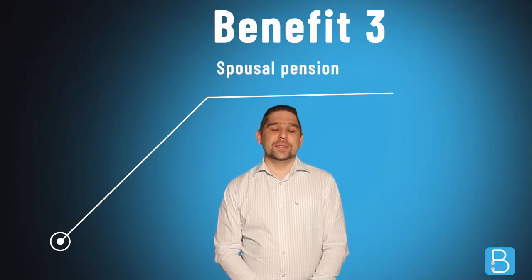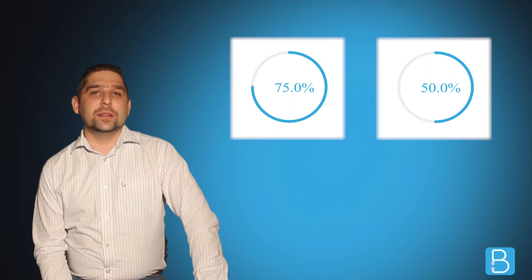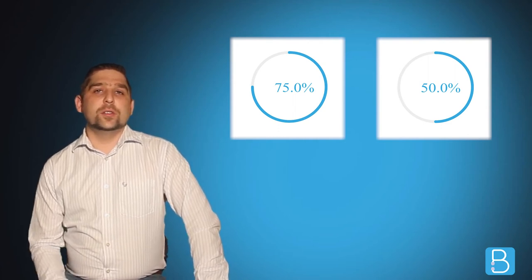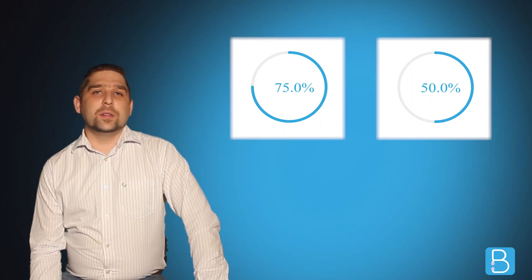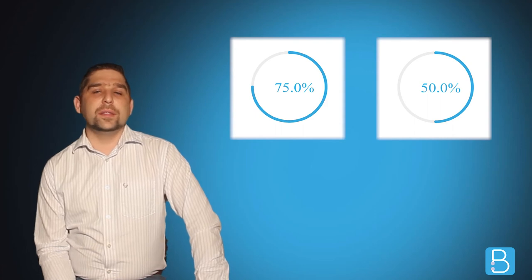Benefit number three: Spousal pension. At retirement, you have the option to select either 75% or 50% as a spousal pension. This means that should you pass away, your spouse will continue to get 75% or 50% of your pension up until they pass away. This is a great way for GPF members to protect the future of both themselves and their partners.